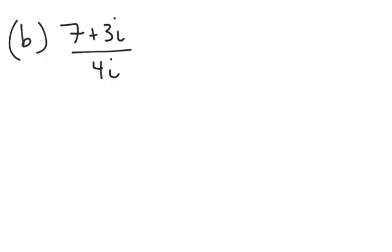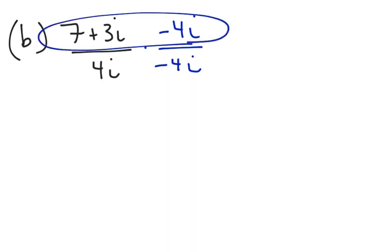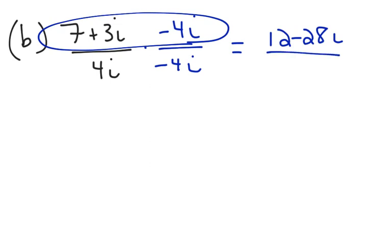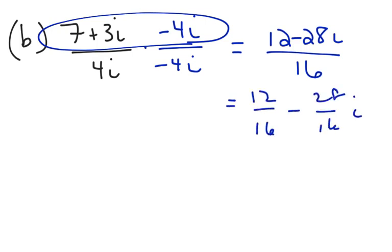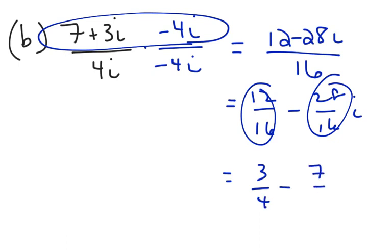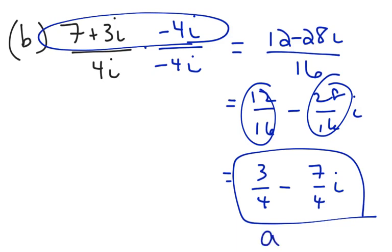Let's look at another division problem. I want to get rid of 4i in the denominator. The conjugate of 4i is negative 4i — remember, conjugate means change the sign of the imaginary component. Using the calculator to multiply, you get 12 minus 28i over 16. You need to reduce: 12 over 16 minus 28 over 16 i. Reducing each fraction separately, 12 over 16 is 3 fourths and 28 over 16 is 7 over 4. Here is the answer in a plus bi format.